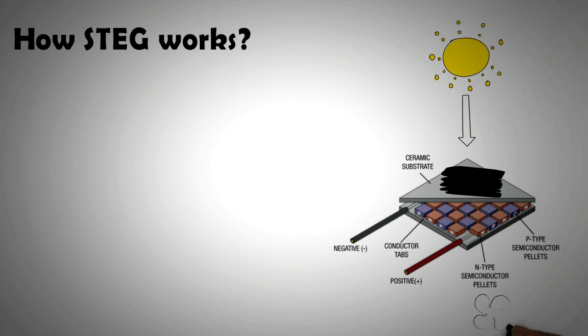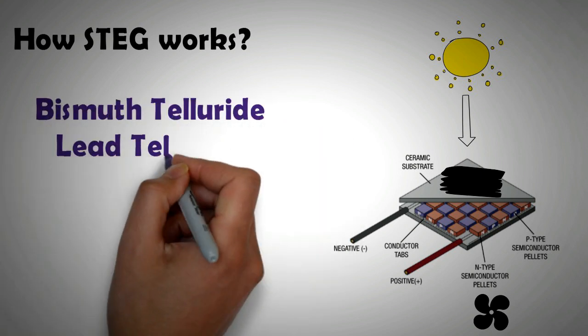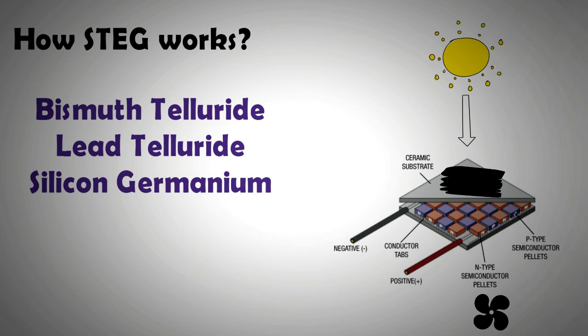The semiconductor materials that have been used for STEG are bismuth telluride, lead telluride, or silicon germanium. Each of these materials have low thermal conductivity and a high power factor. The greater the temperature gradient across the plates, the more electric current is produced. Solar energy can be concentrated to increase the temperature difference.